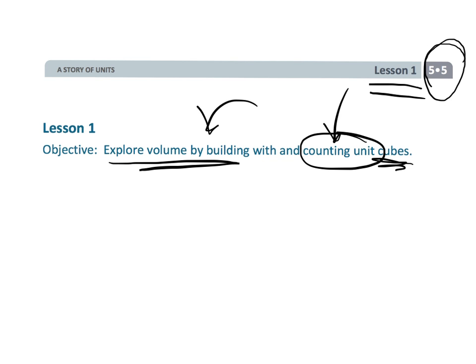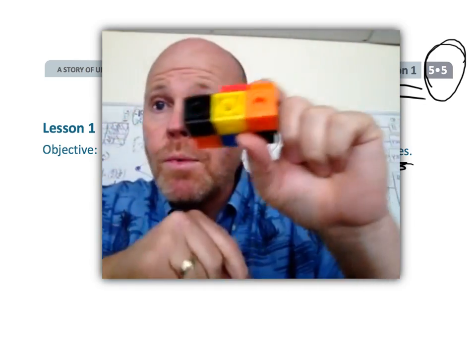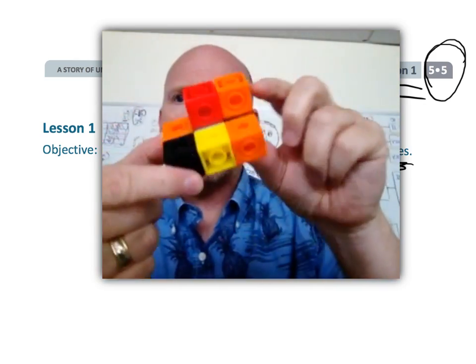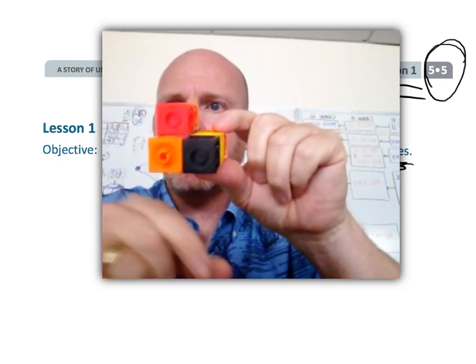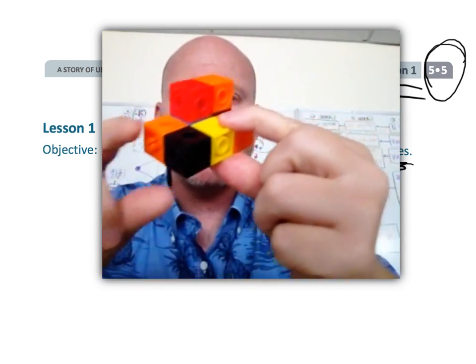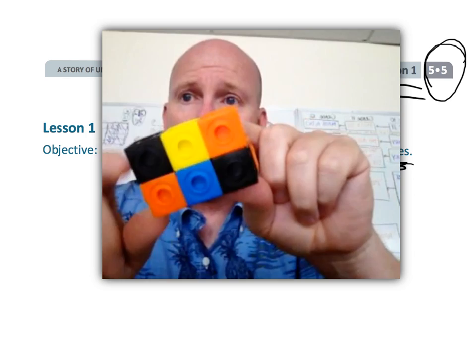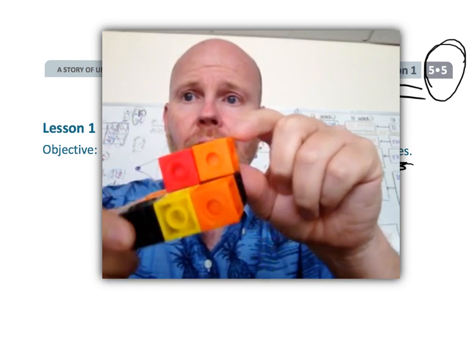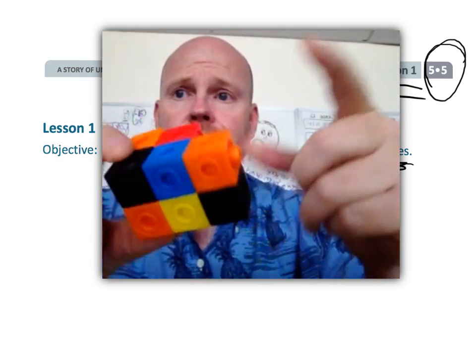An example of what we're talking about here is this figure. There's no simple formula for this figure because it's kind of irregular, and so what we want students to be doing is building this with actual cubes and then counting. There's six cubes down here and then two cubes up at the top, so we have a total of eight cubes.